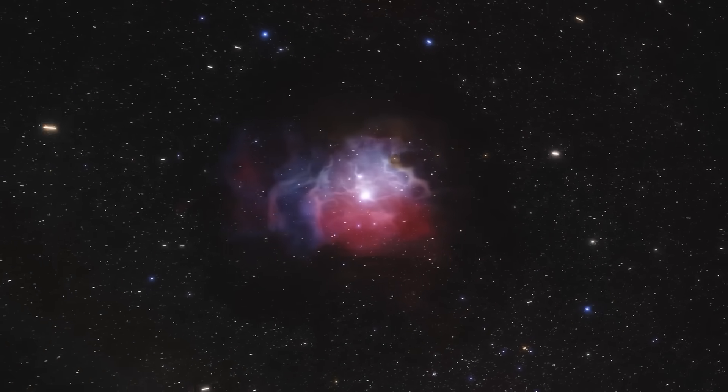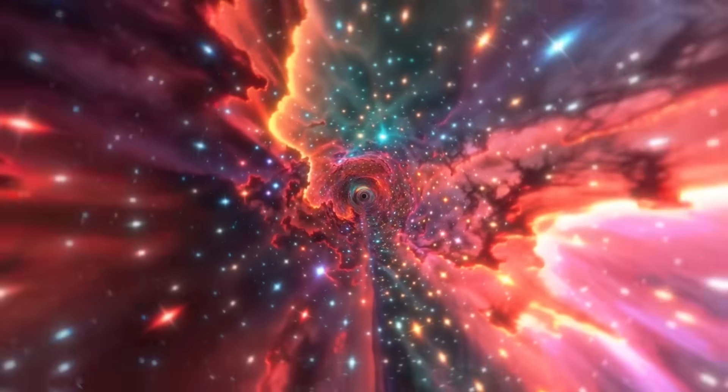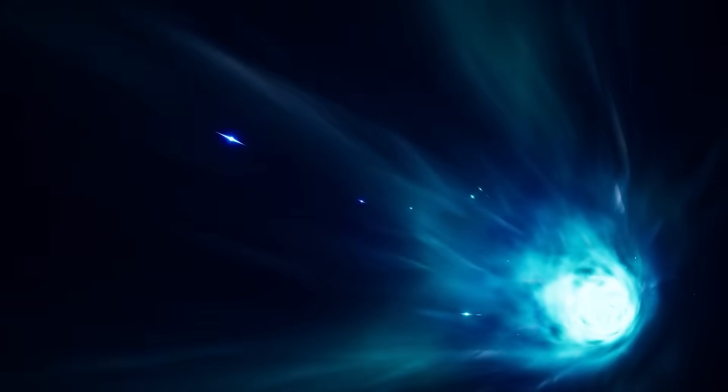As these giants circle each other, they emit gravitational waves, ripples in spacetime, that carry energy away from the system. These invisible waves cause the black holes to spiral gradually closer, their cosmic waltz growing ever tighter.